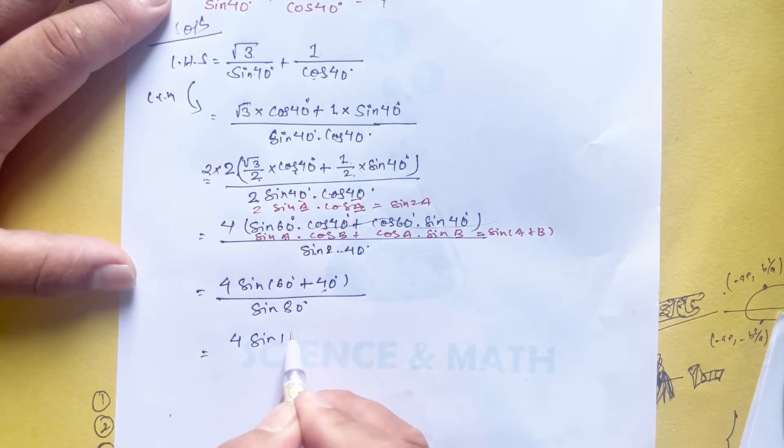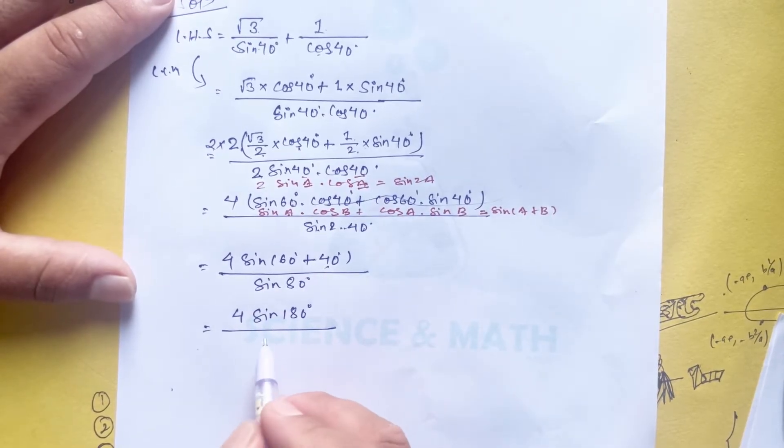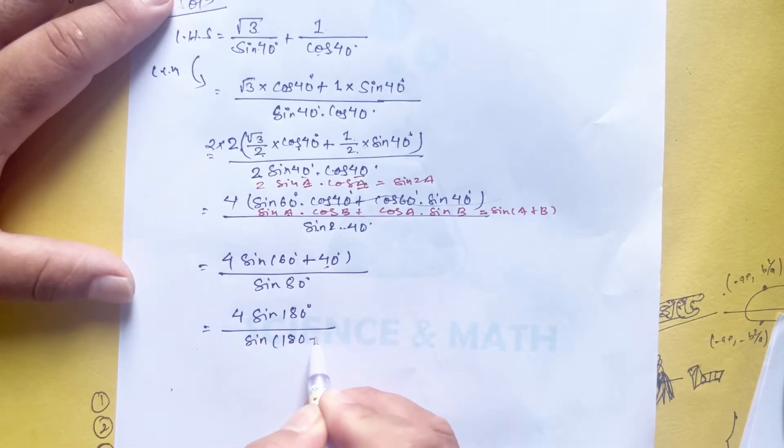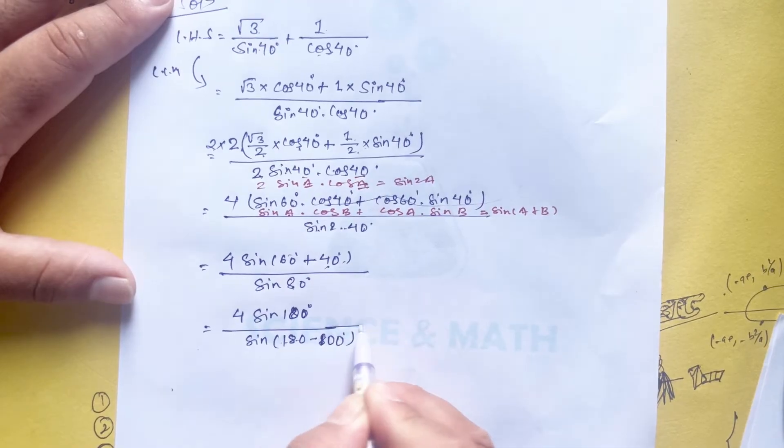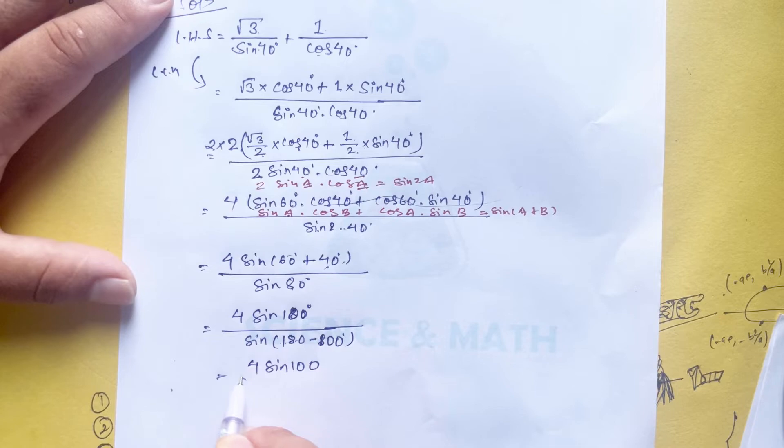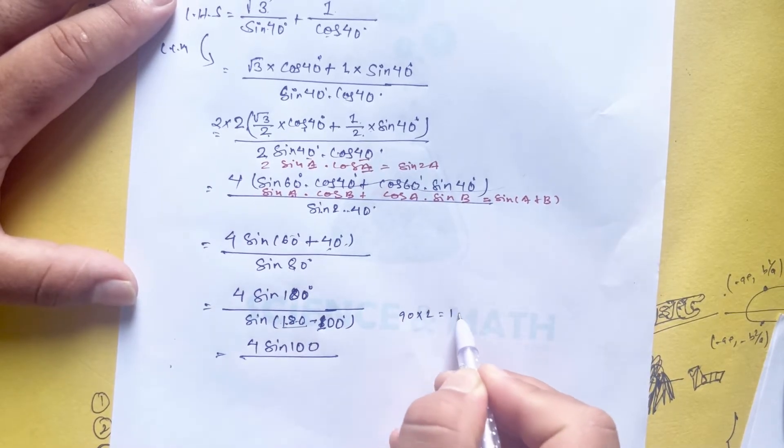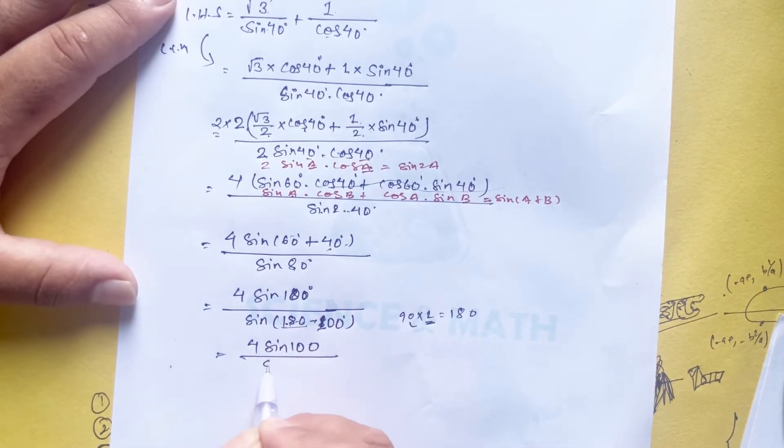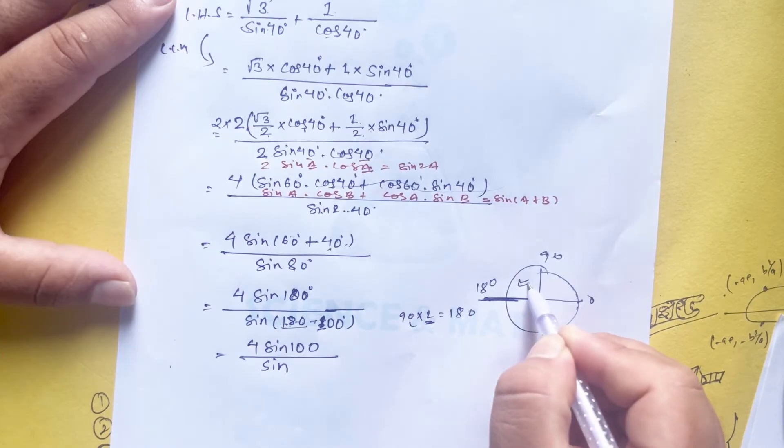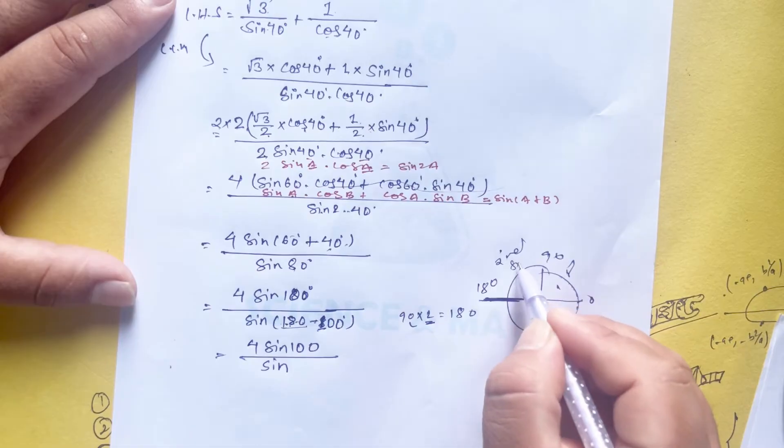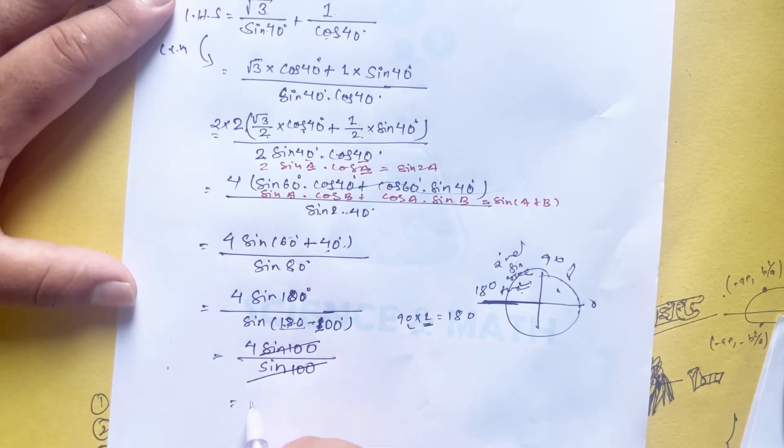For the denominator, using the formula sin 2a, we get 2(sin 60 + 40) over sin 2(40), which equals 2 sin 100 over sin 80. Now sin 100 equals sin(180 - 80), and sin(180 - theta) equals sin theta, so sin 100 equals sin 80. These cancel out, giving us 4.